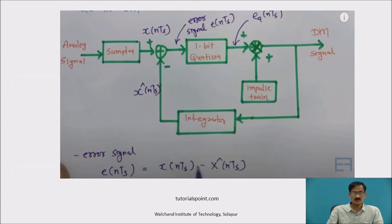This is the diagram of delta modulation: sampler, 1-bit quantizer, and difference amplifier. The difference amplifier gives signal U(NTs) = X(NTs) - X-cap(NTs). The output of the 1-bit quantizer EQ(NTs) is multiplied with the impulse pulse, and this output is integrated and fed back as X-cap(NTs) to the difference amplifier at the input side. This is the error signal E(NTs) = X(NTs) - X-cap(NTs).